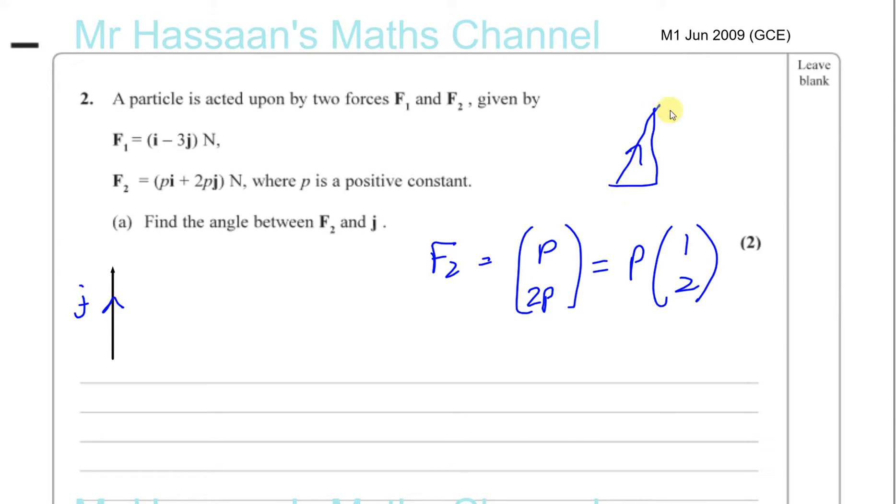So the vector F2 is going to be in the direction 1, 2. One to the right and 2 up. So it's going to be in this kind of direction up there. The P is just a constant, a positive constant. So that just determines how big it's going to be, whether it's going to be longer or short or whatever. It doesn't affect the direction. It just affects the length. So all we need in part A is the angle between F2 and J. So all we care about is the direction that it's going in. So it's going in the direction 1, 2. So let me just draw a vector that's kind of 1 across and 2 up, something like this. That might be something in the direction of F2. We need to find this angle here. This is the angle we have to find. Let me call it angle theta.